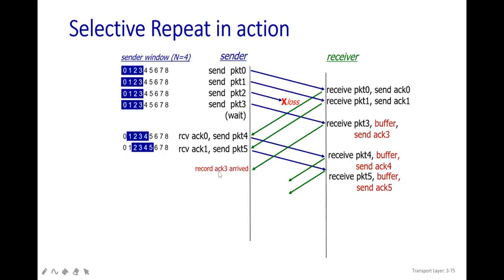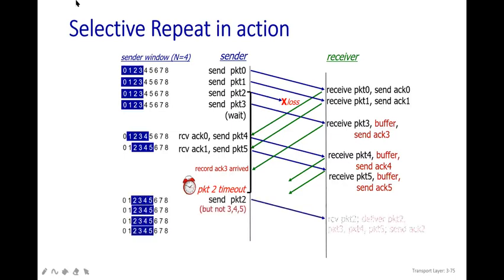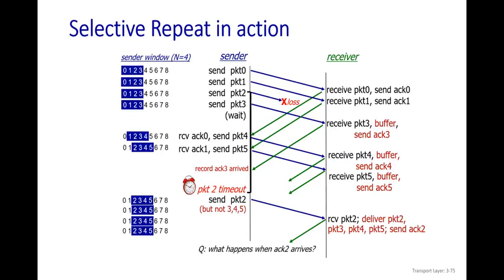The sender receives acknowledgement three — it notes packet three is already buffered. The timeout for packet two expires, so the sender retransmits only packet two. This time, packets three, four, and five are NOT retransmitted because they are already in the buffer. Once packet two is received, the receiver delivers packets two, three, four, five in order — they were all waiting in the buffer — and sends acknowledgement two, after which all remaining acknowledgements are received simultaneously.